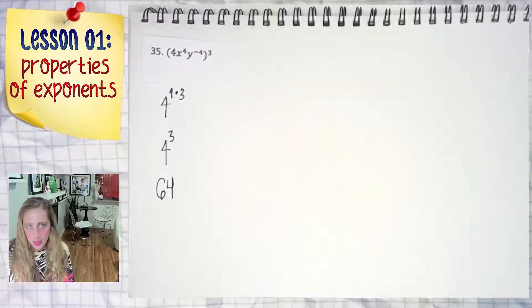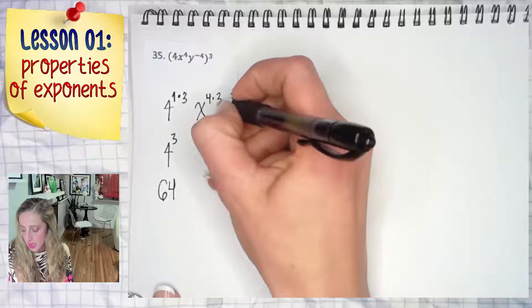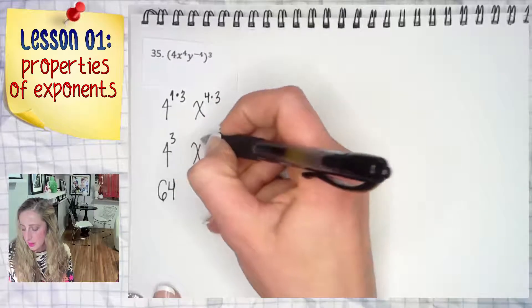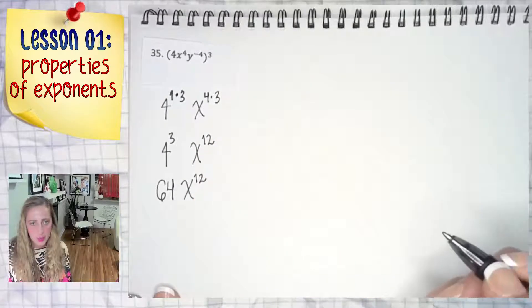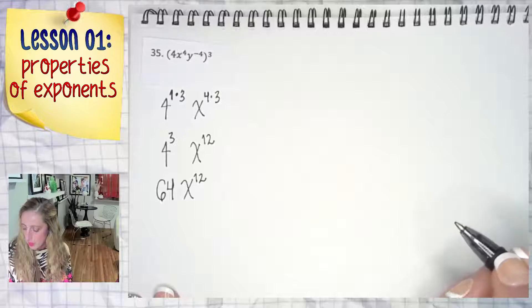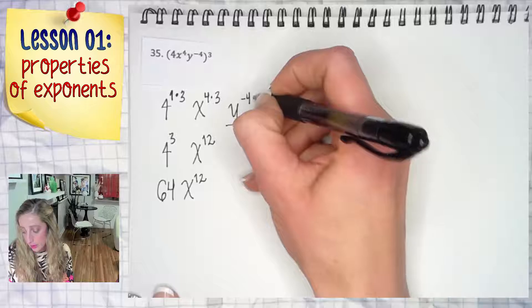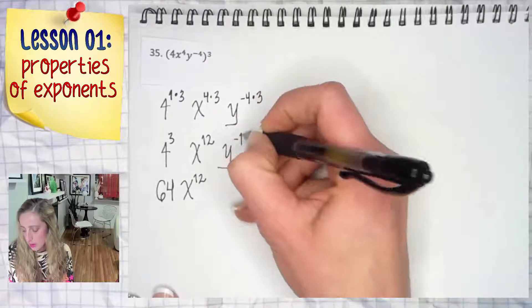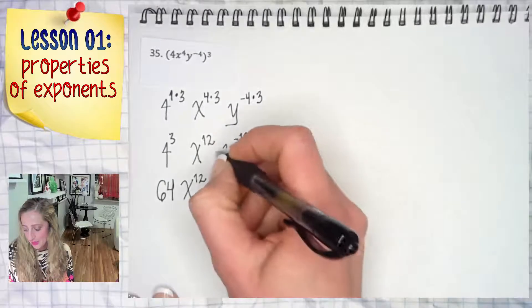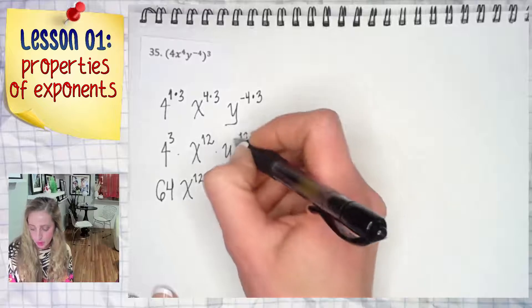Carrying on: x to the fourth times three, which is x to the twelfth, and that's a positive exponent so it's pretty happy where it is. Then y to the negative four times three, which is y to the negative 12. We don't want that in a numerator or we don't want a negative exponent in our answer.